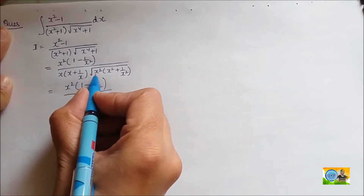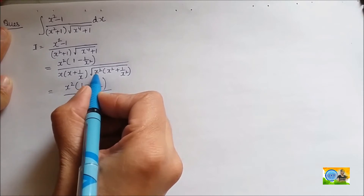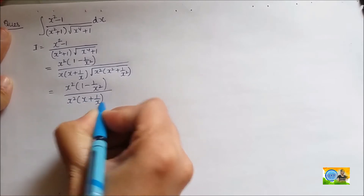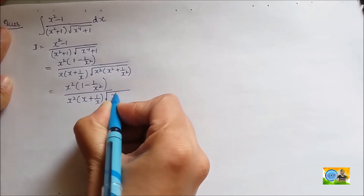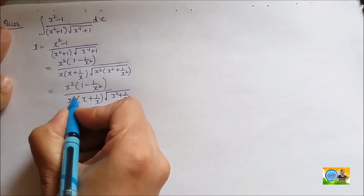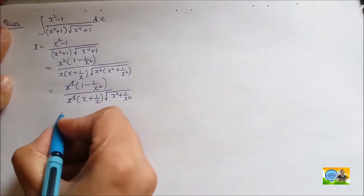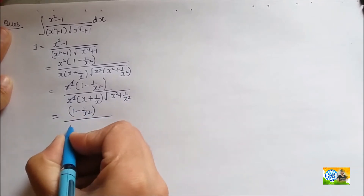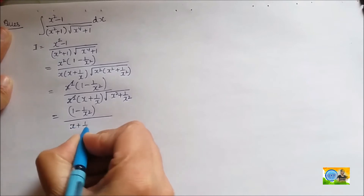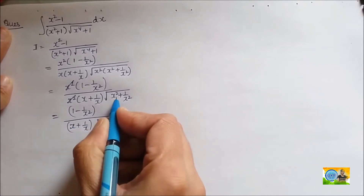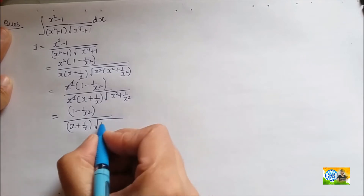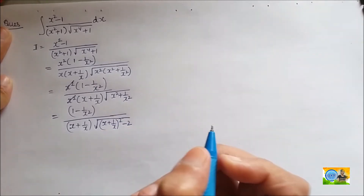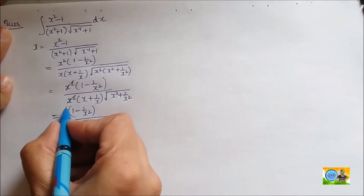This is x, and this is the square root of x². So I can take x outside of this square root, getting x²(x + 1/x). The x² terms cancel, and I am left with (1 - 1/x²) in the numerator. In the denominator, this will be (x + 1/x) times the square root of (x + 1/x)² - 2. So our integral reduces to this form.